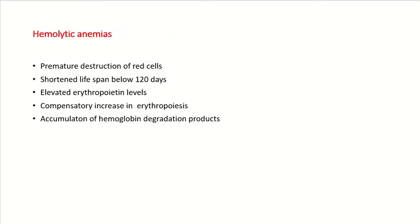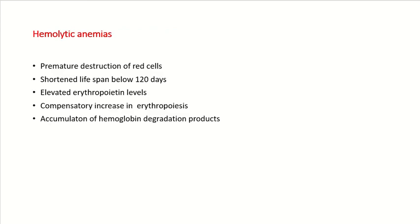Today our main topic of discussion is hemolytic anemia. The normal RBC lifespan is 120 days. In hemolytic anemia, there is premature destruction of red cells — their lifespan becomes decreased and destruction starts at a rapid rate. When increased destruction of RBCs begins, the bone marrow responds by increasing RBC production. This is known as compensatory increase in erythropoiesis.